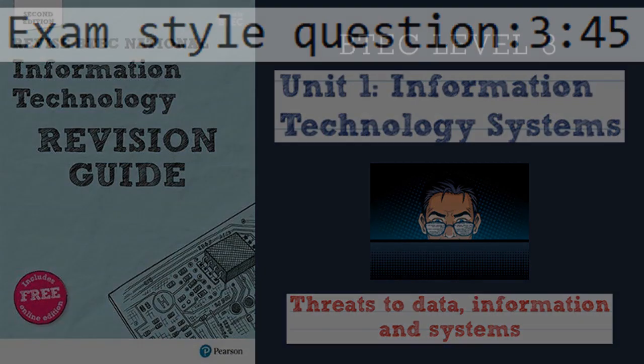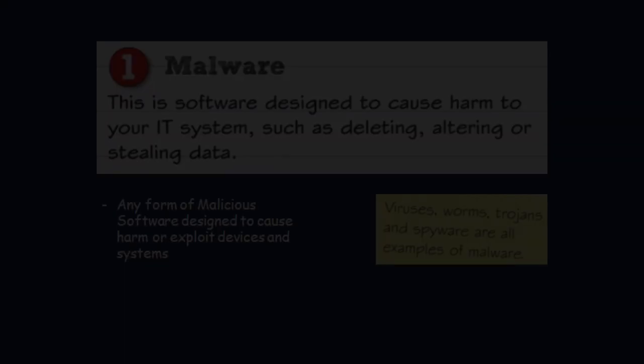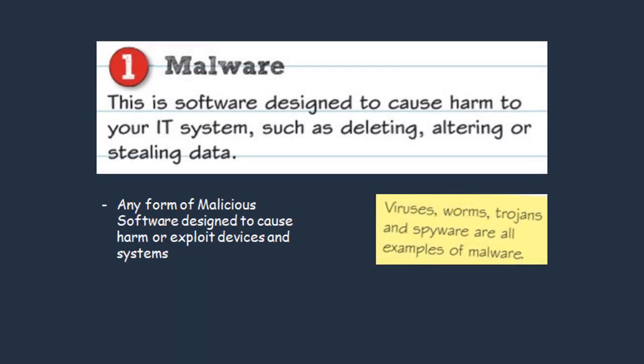The first threat to information and systems is malware. Malware is any form of malicious software designed to cause harm or exploit devices and systems. Hackers might use these types of software to delete your files, alter them, or even steal data. Some examples of malware include viruses, worms, trojans, and spyware.